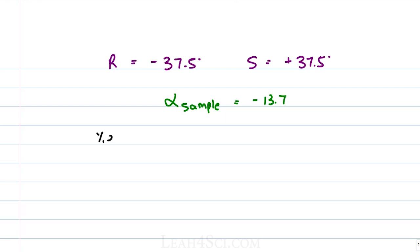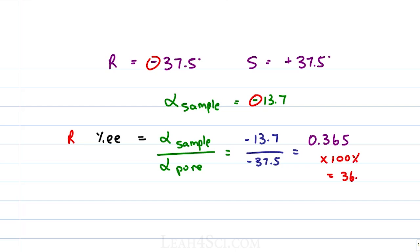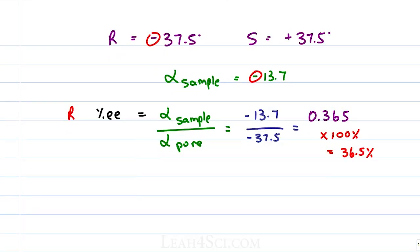So let's set it up. Percent enantiomeric excess is equal to alpha sample over alpha pure. In this case, the sign is negative so we know that it's going to be R. So it's percent enantiomeric excess of R and then alpha sample is equal to negative 13.7. Alpha pure is equal to negative 37.5. Punch that into the calculator. The negatives cancel out. We're just looking for a percent value. Punch this into the calculator and you get 0.365. Don't forget to multiply this by a hundred percent which gives us 36.5 percent enantiomeric excess.